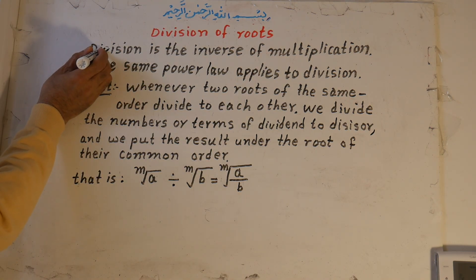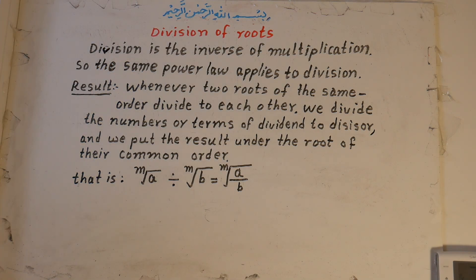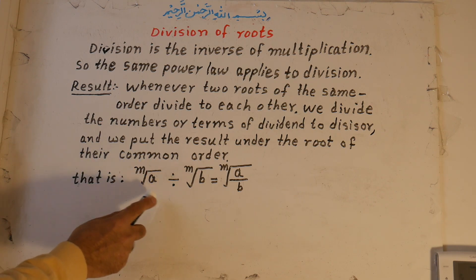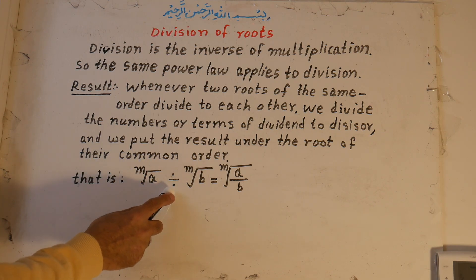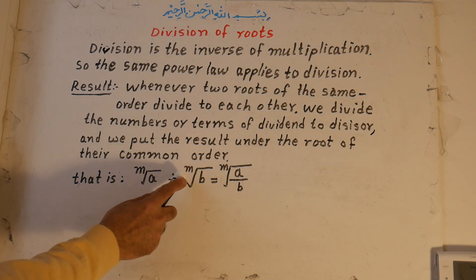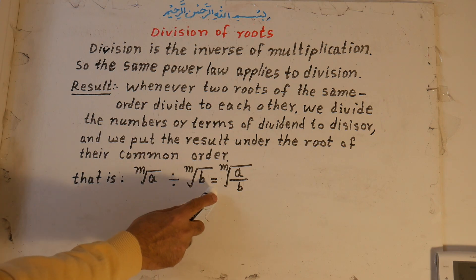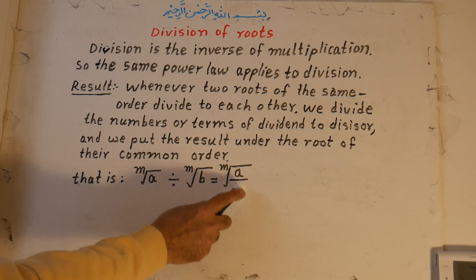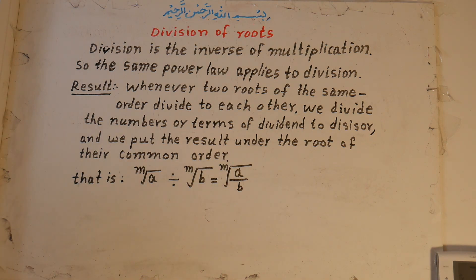That is: A under the root of M, divided by B under the root of M, is equal to A over B under the root of M.